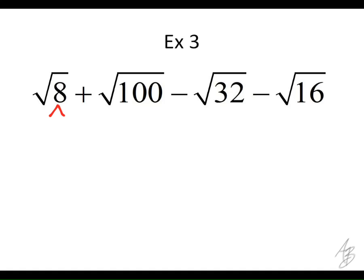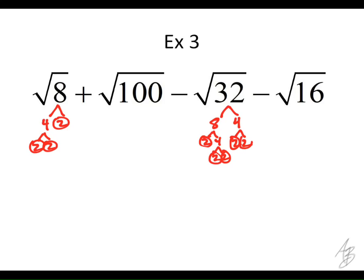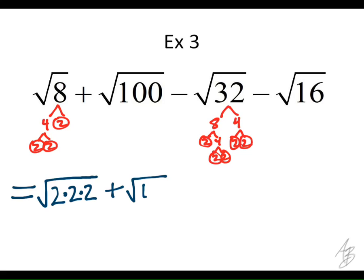How does 8 factor? 4 and 2, then 2 and 2. So as Claire said: 2, 2, and 2. We'll skip over the 100. How about the 32? That's 8 and 4, then 8 is 2 and 4, and 4 is 2 and 2 — we should end up with five 2s. So when we factor those, we get 2 times 2 times 2 for the 8, and 2 times 2 times 2 times 2 times 2 for the 32. Now I'm going to rewrite this whole expression. The square root of 8 becomes the square root of 2 times 2 times 2. The square root of 100 is the same as the square root of 10 squared.